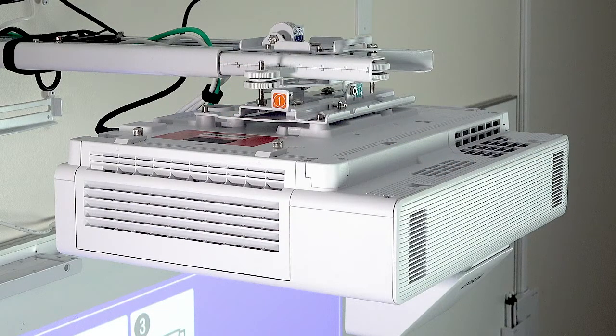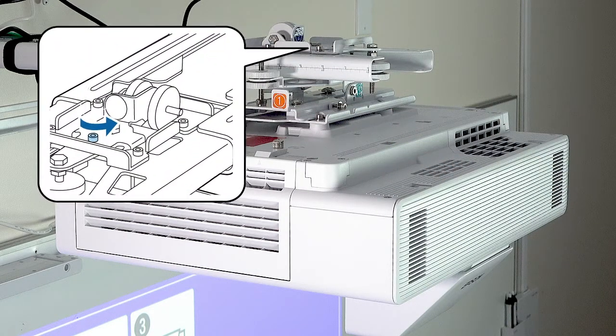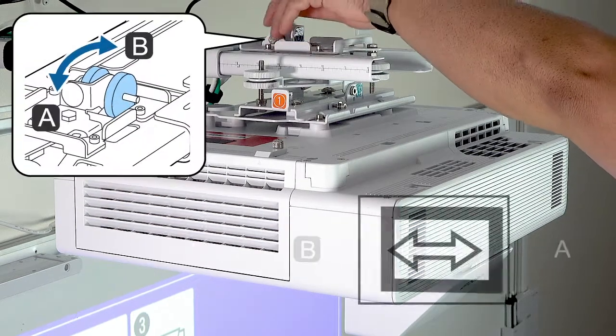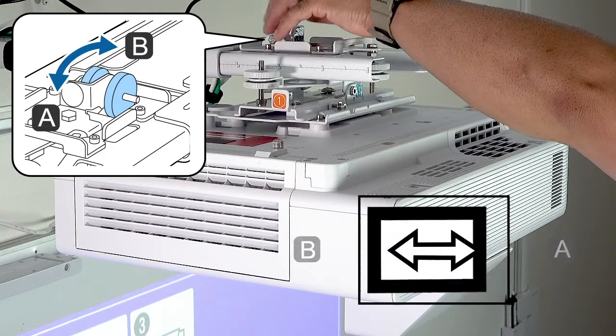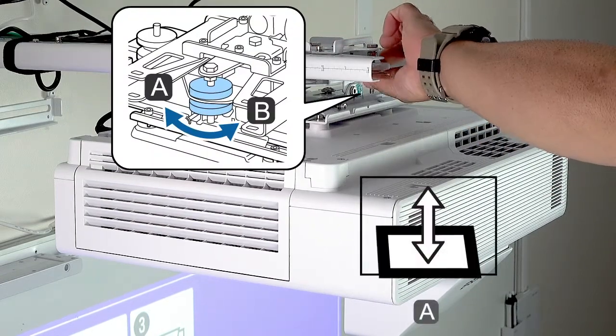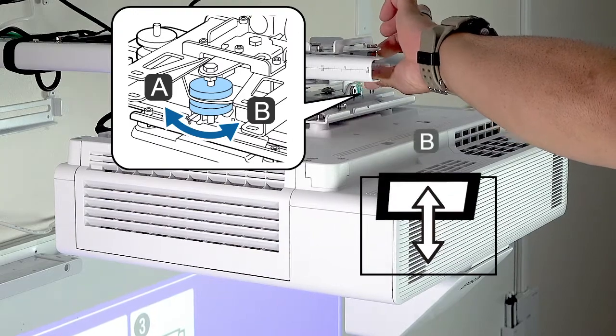Before adjusting dial 2, loosen this screw. Tighten it when you're done. Dial 2 adjusts the yaw or horizontal keystone, and dial 3 adjusts the pitch or vertical keystone.